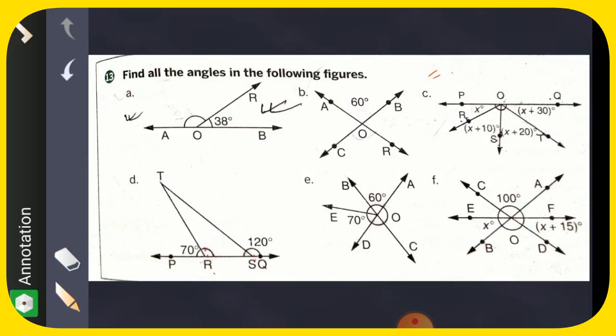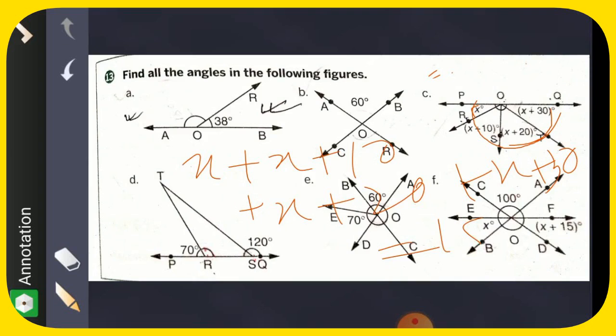Now number c: you see this is x, this is x plus 10, this is x plus 20, this is x plus 30. This total is 180, so what you will do is add all: x, x plus 10, x plus 20, x plus 30, and form an equation. This all equals 180 degrees, then you find the x. It is also easy.